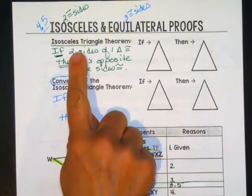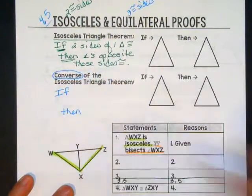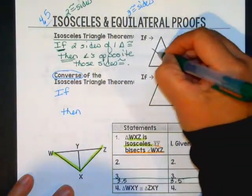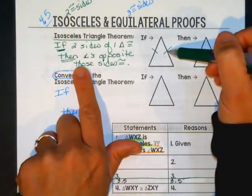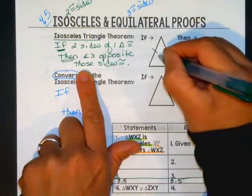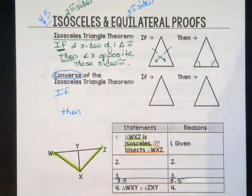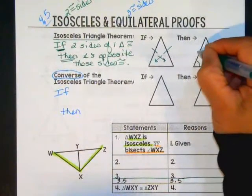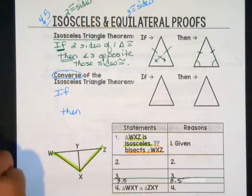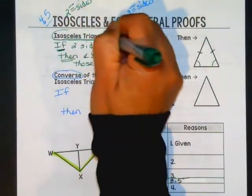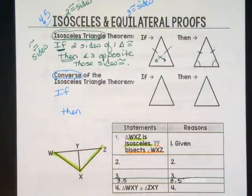Let's talk about these right now. There's a theorem — the isosceles triangle theorem — which says if two sides of one triangle are congruent, then the angles opposite those sides are congruent. So if this is my isosceles triangle, here are my two sides that are congruent. That means these angles would have to be congruent — the ones across from them.